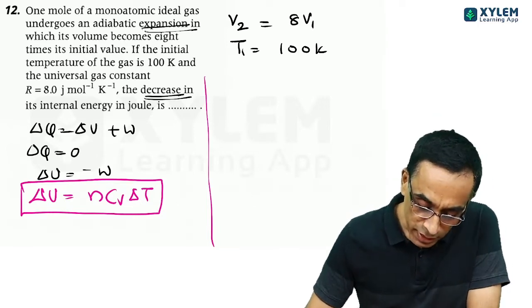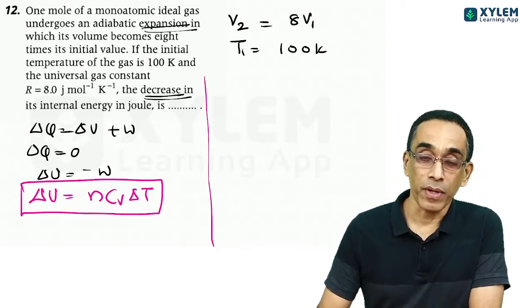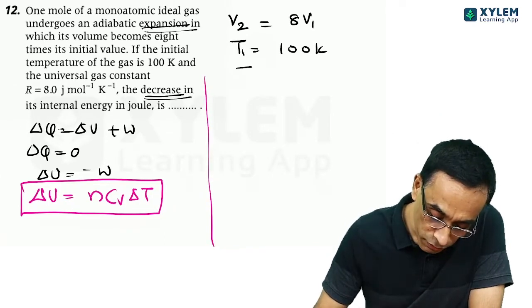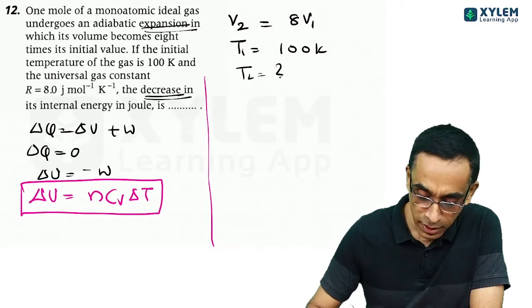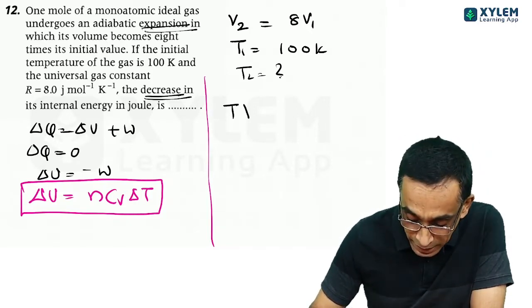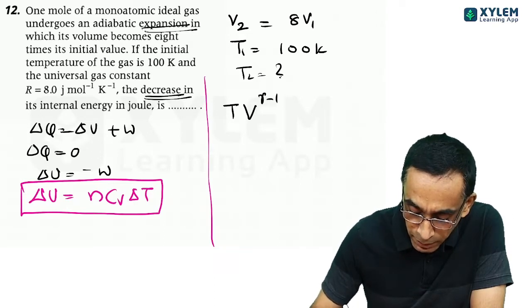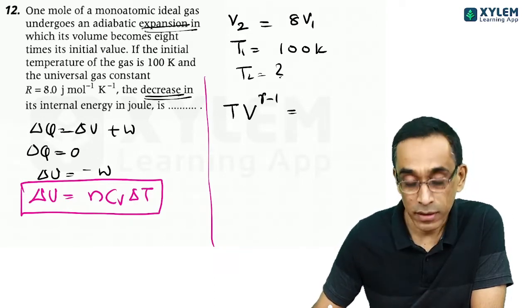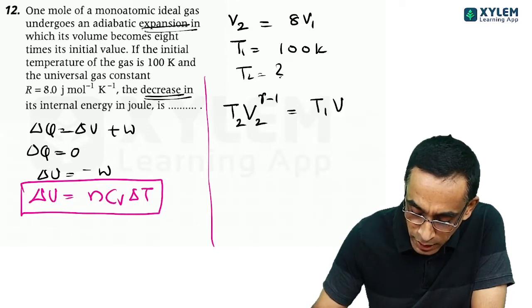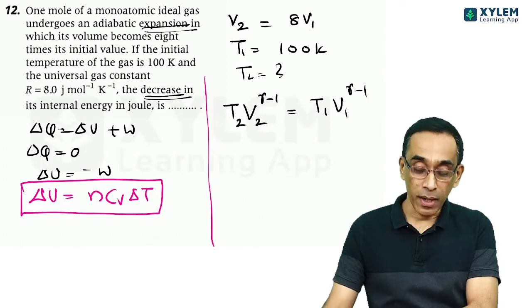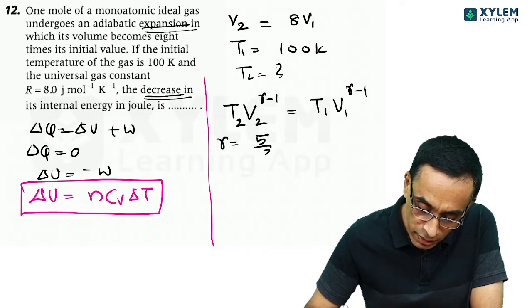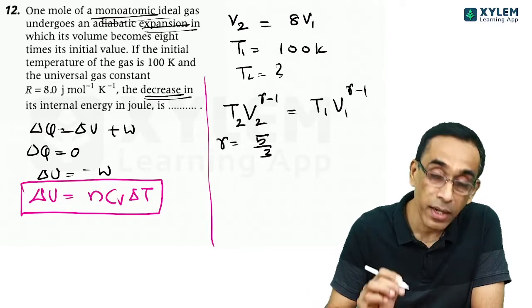It is given that volume changes from V1 to 8V1. Initial temperature is given, so you can find out the final temperature. For an adiabatic process, we have this equation: TV raised to gamma minus 1 is a constant. So we can write T2V2 raised to gamma minus 1 equals T1V1 raised to gamma minus 1. And gamma is 5 by 3 for the monoatomic gas.